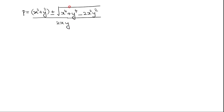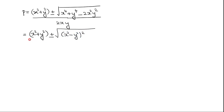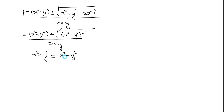Now if you note, under the square root it is an expansion of X squared minus Y squared whole squared. So the term under the square root can be written as X squared minus Y squared whole squared, and the square root gets cancelled. We have X squared plus Y squared plus or minus X squared minus Y squared, divided by 2XY.